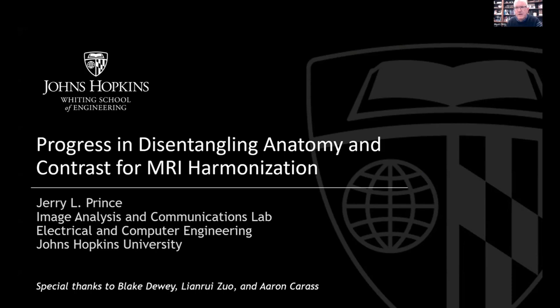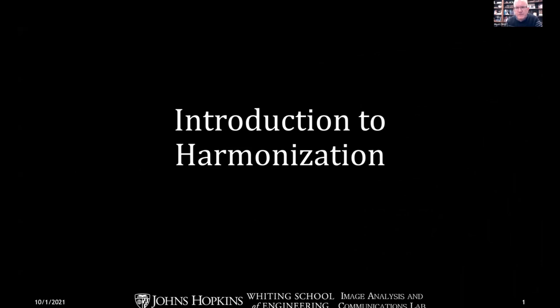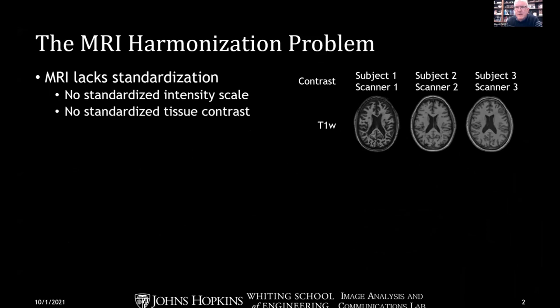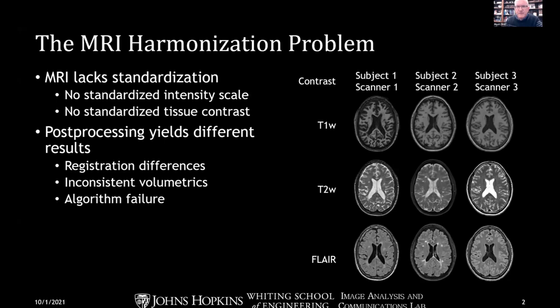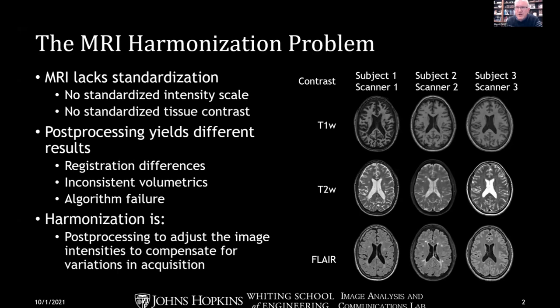First, I'd like to start with an introduction to harmonization. We're all familiar with this problem in MRI: there's a lack of standardization of the intensity scale. This is an example on T1-weighted images from different scanners — all recognizable as T1, but with subtle differences in contrast. The same thing applies to other contrasts like T2 and FLAIR. This causes trouble in post-processing, where we get differences in outcome, inconsistent volumetrics in segmentation, and sometimes outright algorithm failure. Harmonization is the process of adjusting image intensities to compensate for variations in acquisition.